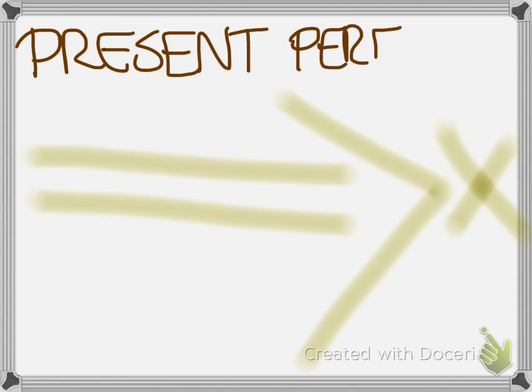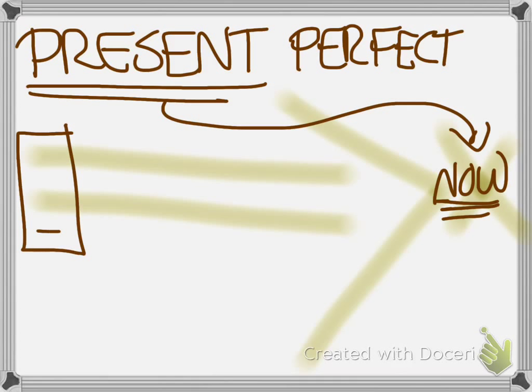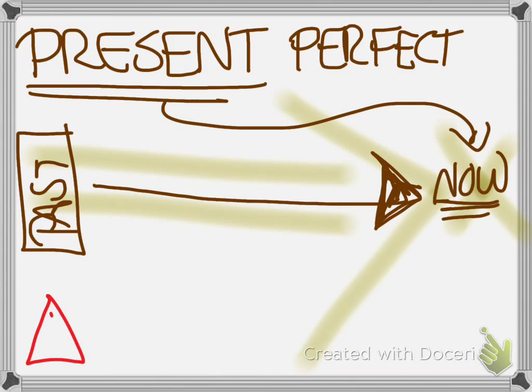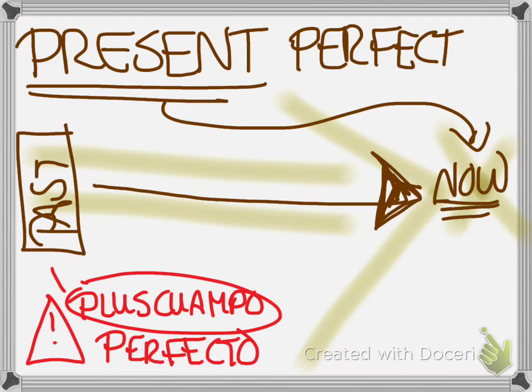Present perfect, it's worth remembering, is a present tense in English. It connects an event to the past and talks about its relationship to now. This is different from Spanish, because in Spanish, pluscuamperfecto technically is a past tense. It doesn't talk about the present.